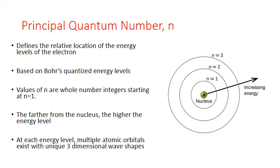Like Bohr's model, the values of n are whole number integers starting at 1. So n equals 1 is closest to the nucleus, n equals 2 is a little bit farther out, and n equals 3 is even further out. The farther an energy level is away from the nucleus, the higher the potential energy it has, because that negatively charged electron is farther from the attractive force of the positive charge in the nucleus.